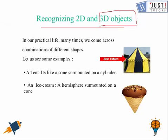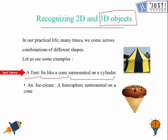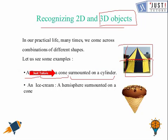So look at this shape. It's a tent. You can visualize this in a manner like it's like a cone surmounted on a cylinder. So this bottom part is cylinder and the top one is cone. So if you can visualize this, you can get 2 shapes out of it. So you can see many shapes like this around you from your real life.